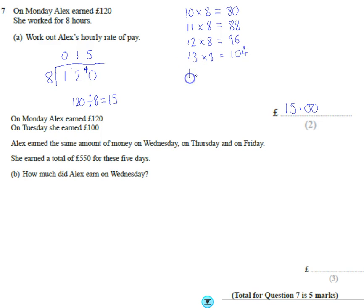And then we're going to do 14 times 8, which is £112, not quite there. And we can see we're getting closer to £120. And then 15 times 8 is £120. So if she works for 8 hours and we know her total is £120, she must have been getting £15 per hour.